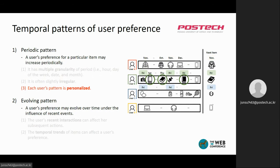Third, each user's periodic pattern is personalized. For example, user B buys a book on Friday, while user C buys groceries on Friday. Therefore, the model should distinguish the difference of each time slot's role between users.